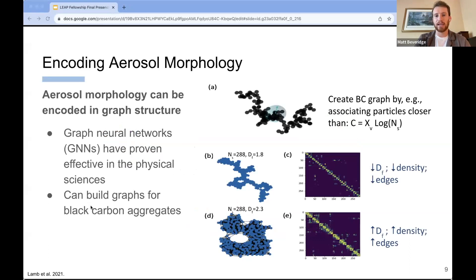For us, we're using characteristic length as the edge property between these nodes in the aggregate. And as the complexity of the aggregate increases, this is represented by the fractal dimension df, the density of the adjacency matrix for this graph will increase.